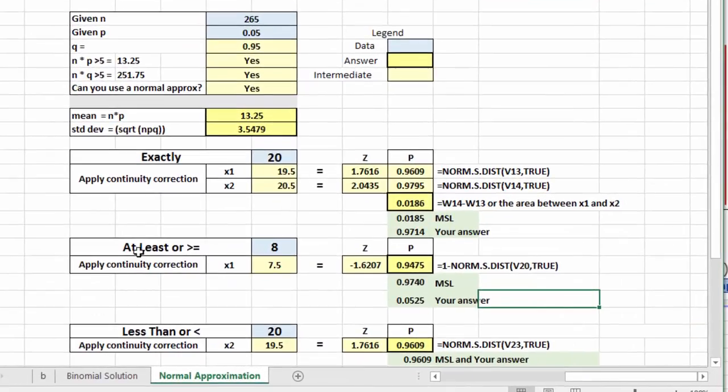The next question was, what is the probability of at least eight workers said they used the public transportation, using that same basic formula? I got a z value, and in this case because we've got an at least, which is greater than or equal, everything to the right of that value of z, I used 1 minus the norm disk to get 0.9475, and that compares favorably with a 0.974 in MSL.